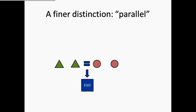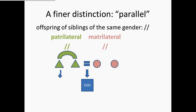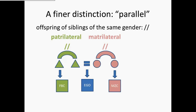We can make a finer distinction — this is a distinction between parallel and cross. Parallel cousins are simply the offspring of siblings of the same gender, and we mark those with two parallel lines. Assuming that your father has siblings and your mother has siblings, you have two kinds of parallel cousins. On the father's side you have patrilateral parallel cousins — those are the children of your father's brother or brothers. On your mother's side you have matrilateral parallel cousins — those are the children of your mother's sister or sisters. We're marking these with squares because they could be either gender. When you're determining cross and parallel, you look at the siblings who are having children, not at the gender of the children.